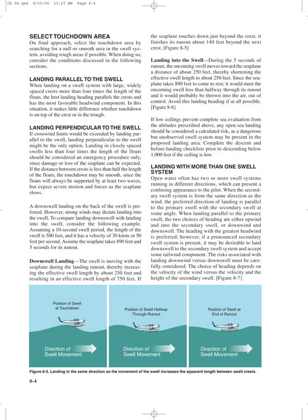To compare landing downswell with landing into the swell, consider this example. Assuming a 10-second swell period, the swell length is 500 feet with a velocity of 30 knots or 50 feet per second, and the seaplane takes 890 feet and 5 seconds for its runout. In a downswell landing, the swell moves with the seaplane, increasing the effective swell length by about 250 feet to 750 feet; if the seaplane touches down just beyond the crest, it finishes its runout about 140 feet beyond the next crest. In contrast, during a landing into the swell, the oncoming swell moves toward the seaplane about 250 feet during the 5-second runout, shortening the effective swell length to about 250 feet. Since the seaplane takes 890 feet to stop, it would meet the oncoming swell less than halfway through its runout and would probably be thrown into the air, out of control. Avoid this landing heading if at all possible.